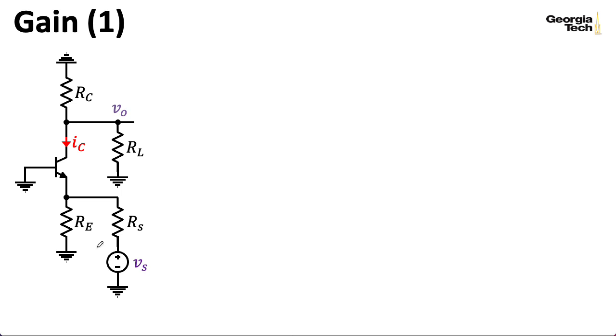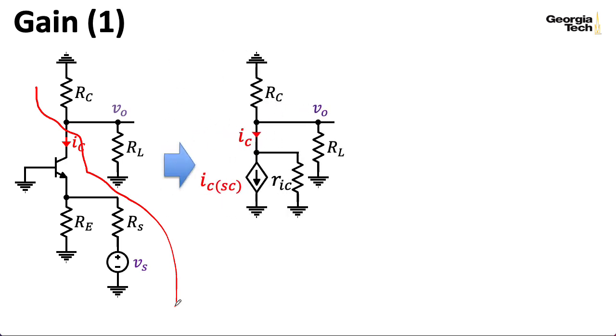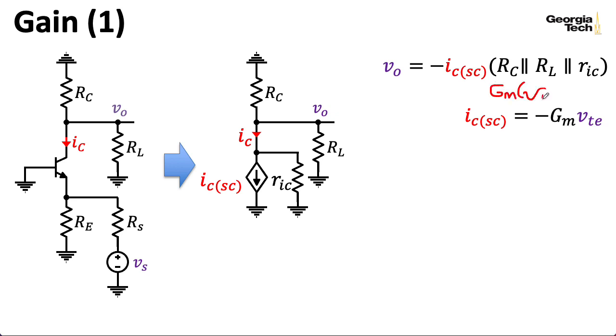All right, so let's compute the gain. What we'll do is we'll take all of the stuff down here and replace it all with our Norton equivalent circuit looking into the collector. So the actual voltage we see at the output can be computed the same way we did for the common emitter amplifier. It's just our short circuit current for the collector. It's this voltage controlled current source right here. And we're turning that current into a voltage with this parallel combination of RC, RL, and our Norton resistance RIC. Now, what is IC? Well, in general, we had a formula like GM times VBE minus VTE. But here VBE is equal to zero. So we can wind up just saying, okay, it's just minus GM times VTE.